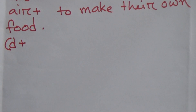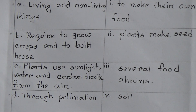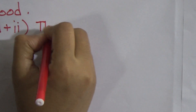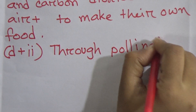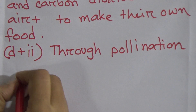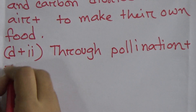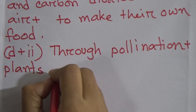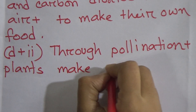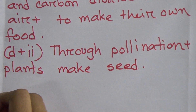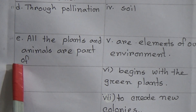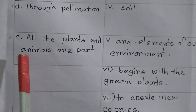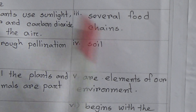Now D — through pollination — it will match with 2, plants make seed. And E — all the plants and animals are part of — that will match with 3, several food chains.